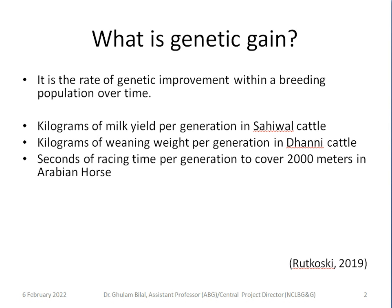A third example is seconds of racing time per generation to cover 2000 meters in Arabian horse — a racing horse where we need to decrease racing time to win the race. Our objective depends upon the direction of selection: either we need to increase or decrease that trait in future progeny.